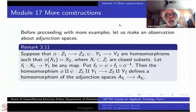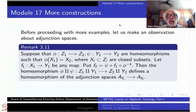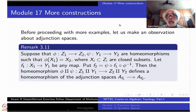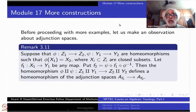I am doing adjunction space constructions over Z1, Y1 and over X1; similarly Z2, Y2 and X2, through maps F1 and F2. I assume that F2 is exactly equal to: start with X2, come to X1 via phi inverse, then take F1, then go back. If you have this data, then you have a disjoint union Z1 and Y1 to disjoint union Z2, Y2, and you have homeomorphism phi disjoint union psi.